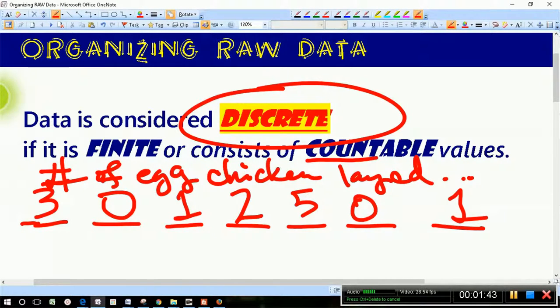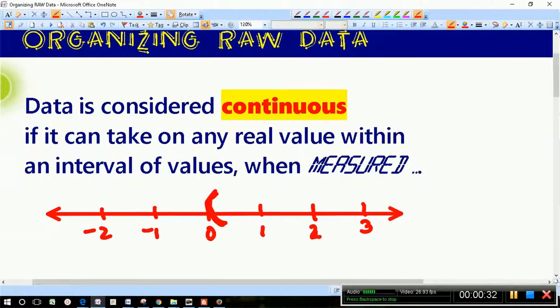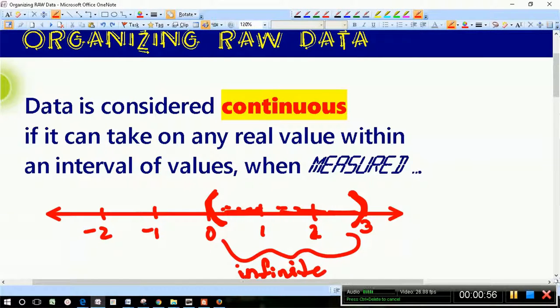If it's not discrete data, the only other thing it can be is continuous. Data is considered to be continuous if it can take on any real value within an interval of values when measured. If this sounds familiar, it should. Think of a number line. Let's let our interval be between zero and three. How many values are between these two numbers? There are an infinite amount of values, not finite as opposed to finite that was discrete data. There would be an infinite amount of possibilities that this variable could take on once I'm done measuring.